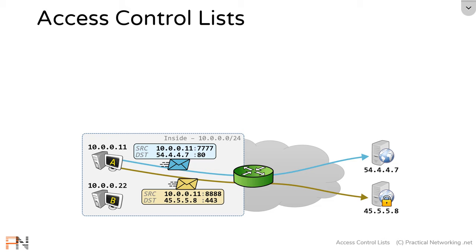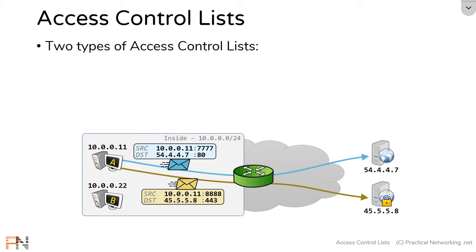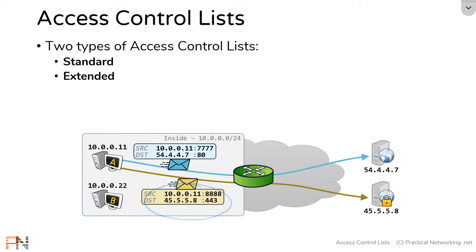We're going to use these two packets to talk through various concepts for access control lists, starting with the two types of ACLs that exist. There are two types of access control lists on a Cisco router: standard and extended. The difference between these two is simply which fields in the packet they use to identify traffic. A standard access list only matches on the source IP address, which means I can match both of these packets by identifying traffic with the source IP address of 10.0.0.11.